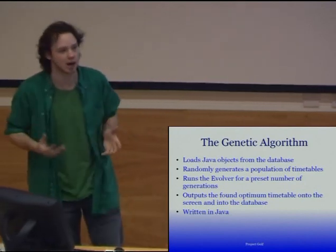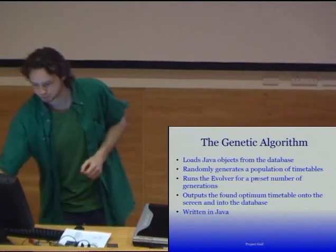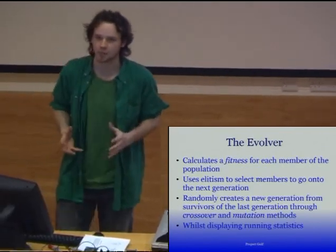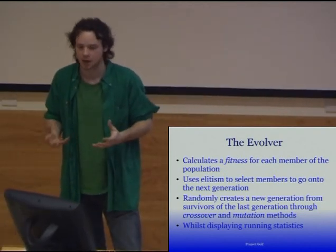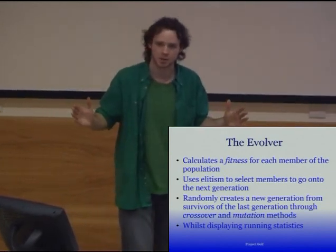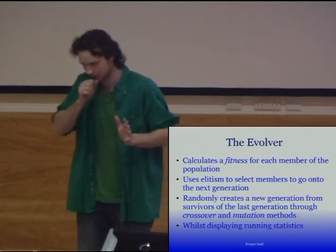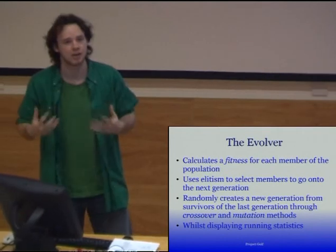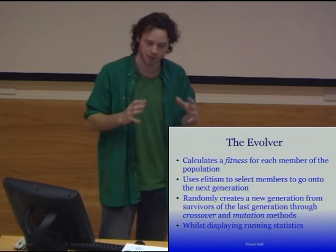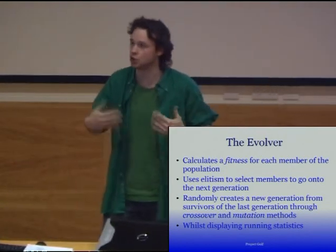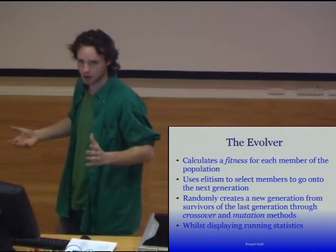We implemented the entire genetic algorithm in Java because it was a language which we're all familiar with. The idea of the evolver is, for each member of the population, it calculates a fitness. It then orders the members of the population by fitness and then uses elitism to pick the best members of the population. Then it uses crossover and rotation techniques on this best subset to create a new generation population, cutting off those with sub-optimum fitnesses.